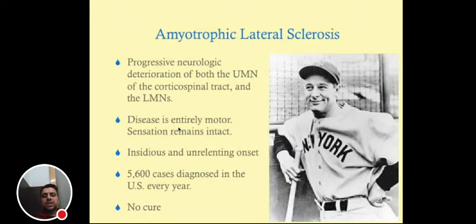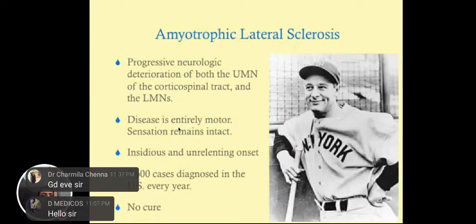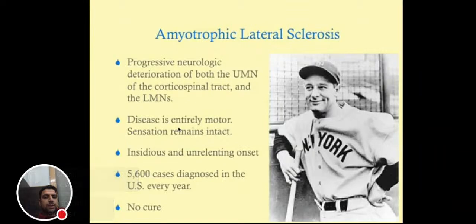In the USA, 5,600 cases are diagnosed every year. There is no cure. Lou Gehrig, a baseball player in the USA, suffered from ALS. Stephen Hawking also suffered from this disease. If somebody is diagnosed with ALS, the survival rate is only five to six years. Both upper and lower motor neurons are involved, but this is a rare disease.